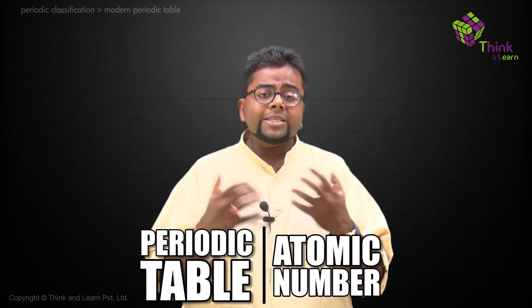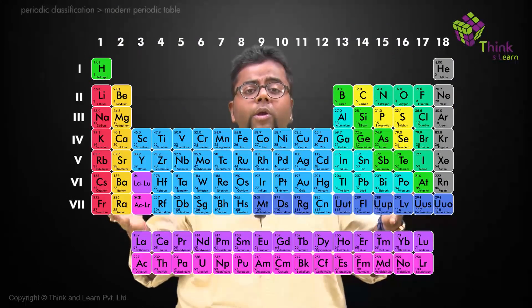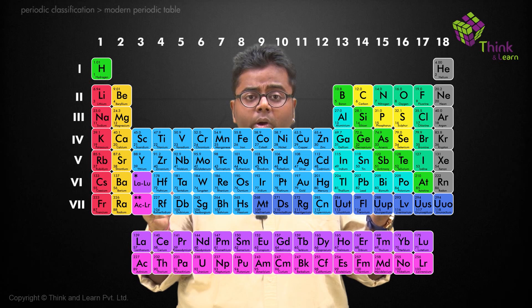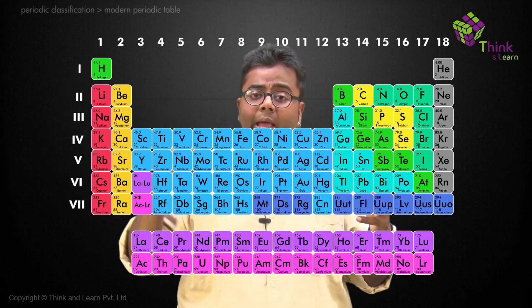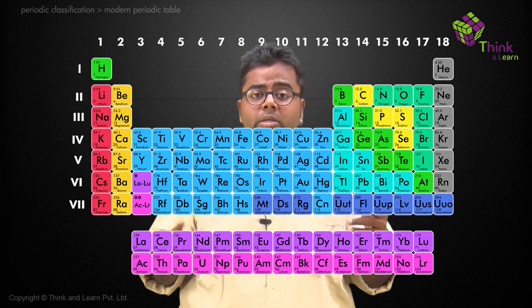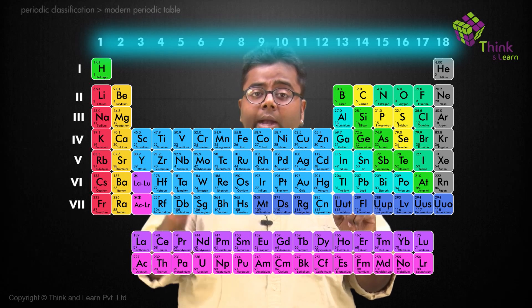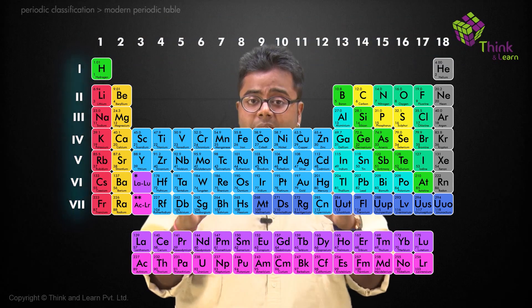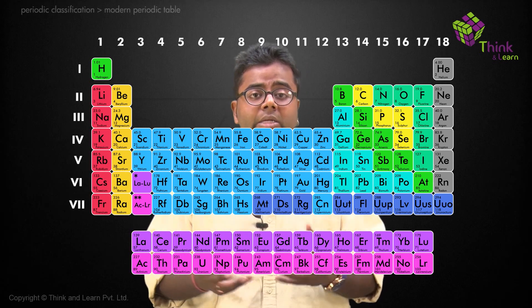When this observation came as a conclusion, this was the periodic table that we got. In this periodic table, we have groups and periods — there will be 18 groups and 7 periods. This is how the modern periodic table was classified.